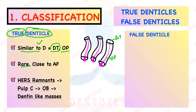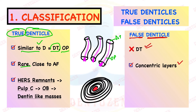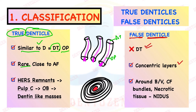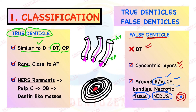False denticles, as the name says, are false — they do not resemble dentine and do not have dentinal tubules. They appear in concentric layers, meaning they form around a center with calcium deposited in layers. That central nidus can be a blood vessel, collagen fiber bundles, or necrotic tissue inside the pulp. All these structures act as a nidus — a central area around which calcium is deposited in concentric layers. So those are false denticles.